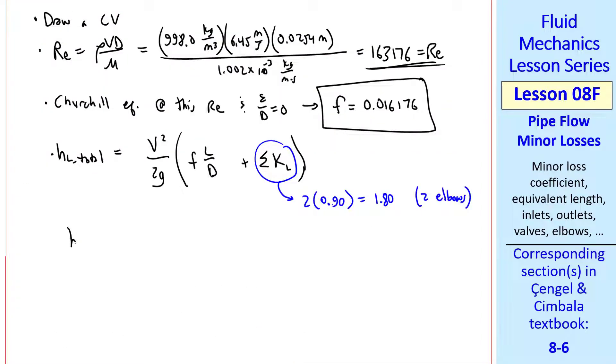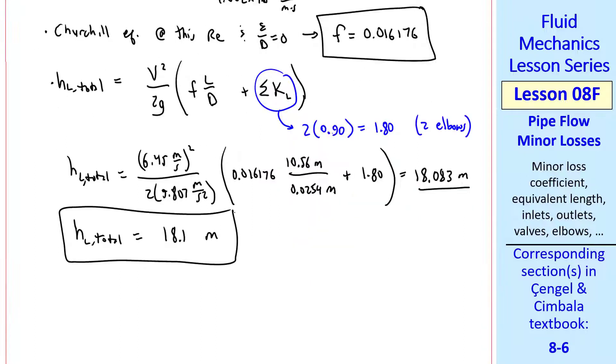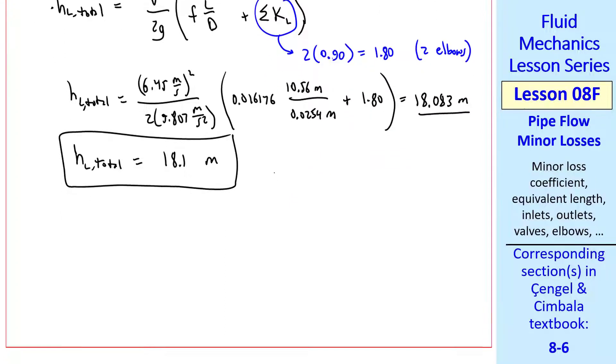So we can plug in the numbers. V squared over 2G F L over D plus sigma KL. I get 18.083 meters. So the three digits HL total is 18.1 meters.